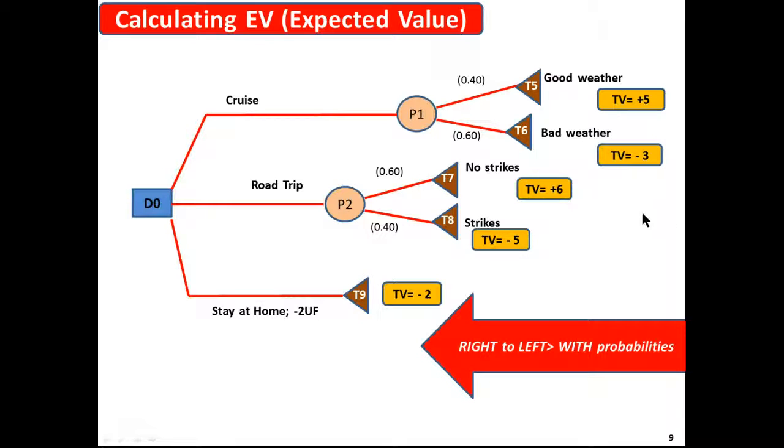Now we have to calculate the expected value. For that we go from right to left. Let's start here. At P1 we have two probable outcomes. So the expected value at node P1 is 0.4 times 5 plus 0.6 times minus 3. You can see a value at node P1 of 0.2. So we put it here expected value 0.2.